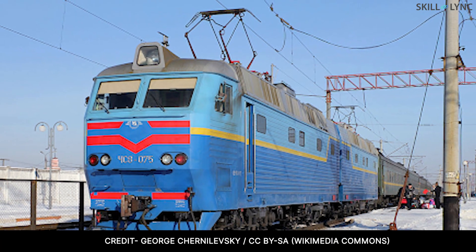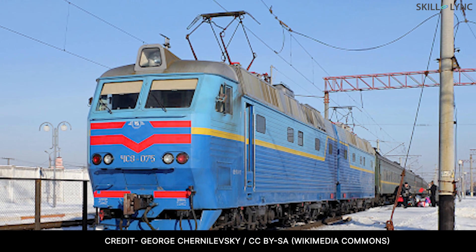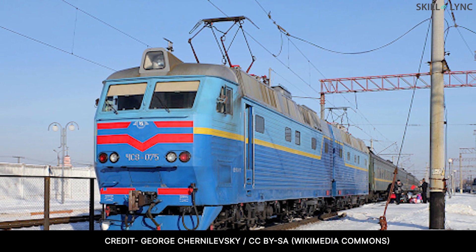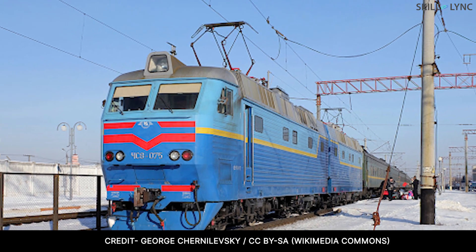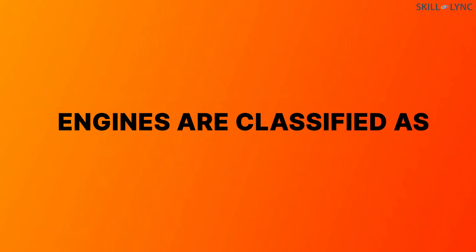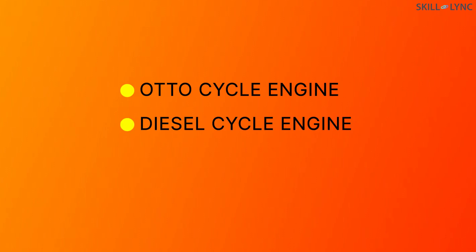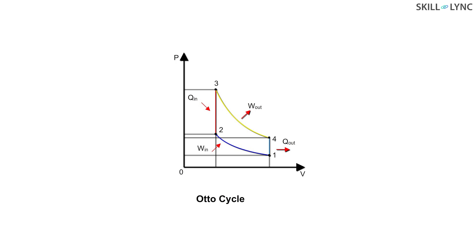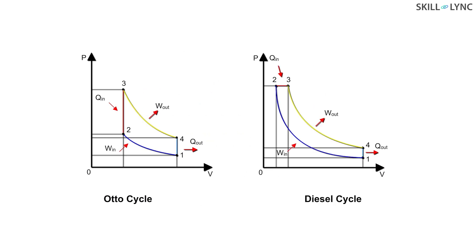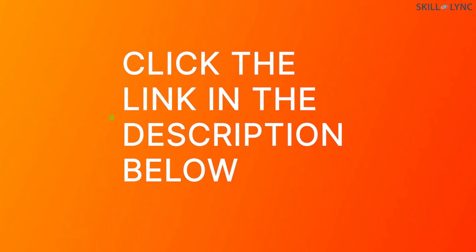The petrol engines that you find in cars operate differently when compared with the diesel engines used in heavy automobiles. One of the reasons for this difference is the cycle of combustion. Based on this, engines are classified as auto-cycle engine, diesel-cycle engine, and dual-cycle engine. Petrol engines use auto-cycle for their operation while diesel engines use diesel-cycle. To learn more about the three cycles of combustion, click the link in the description below.